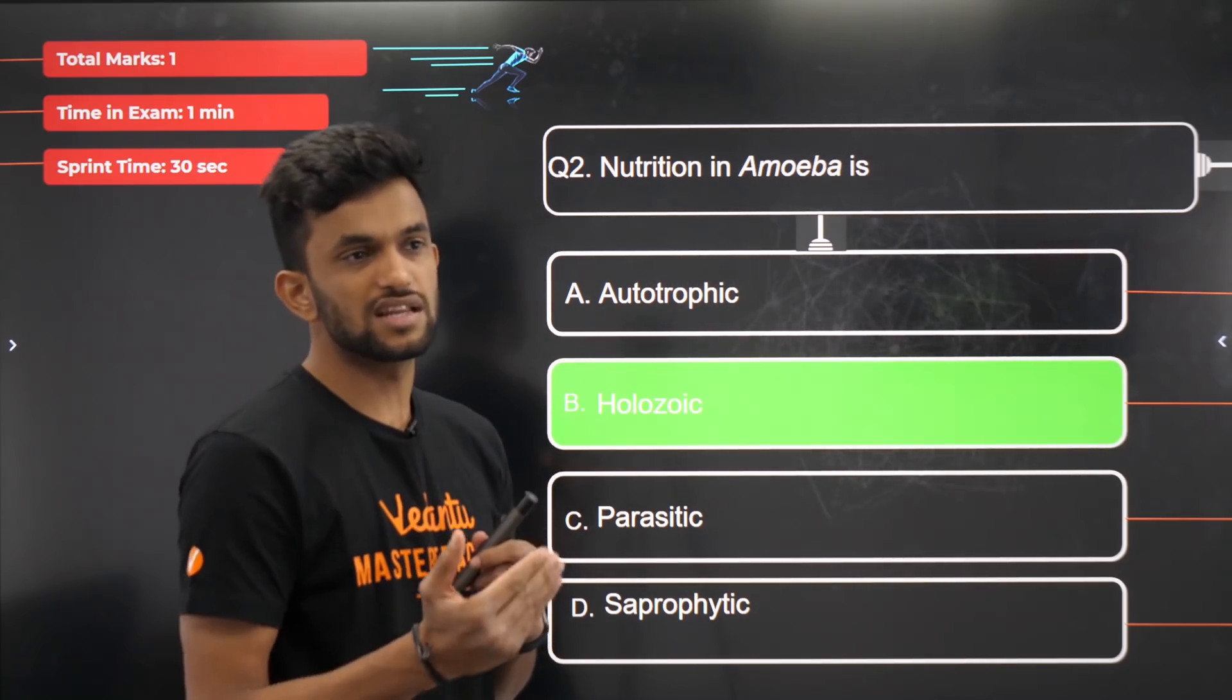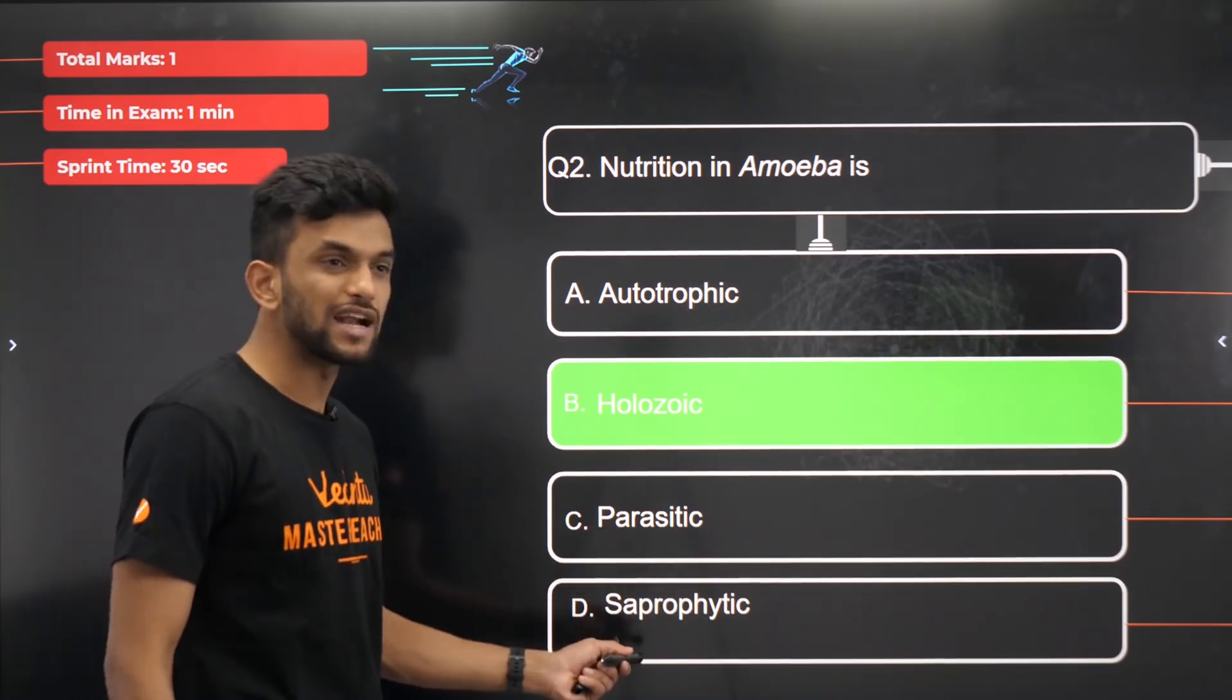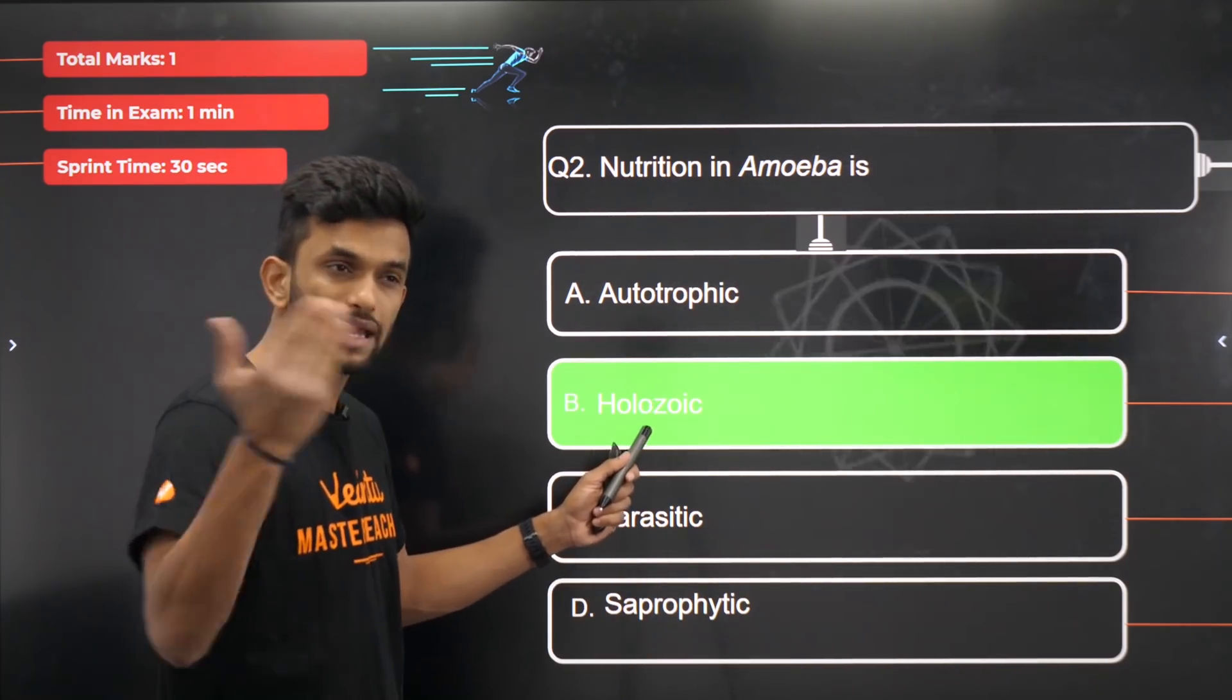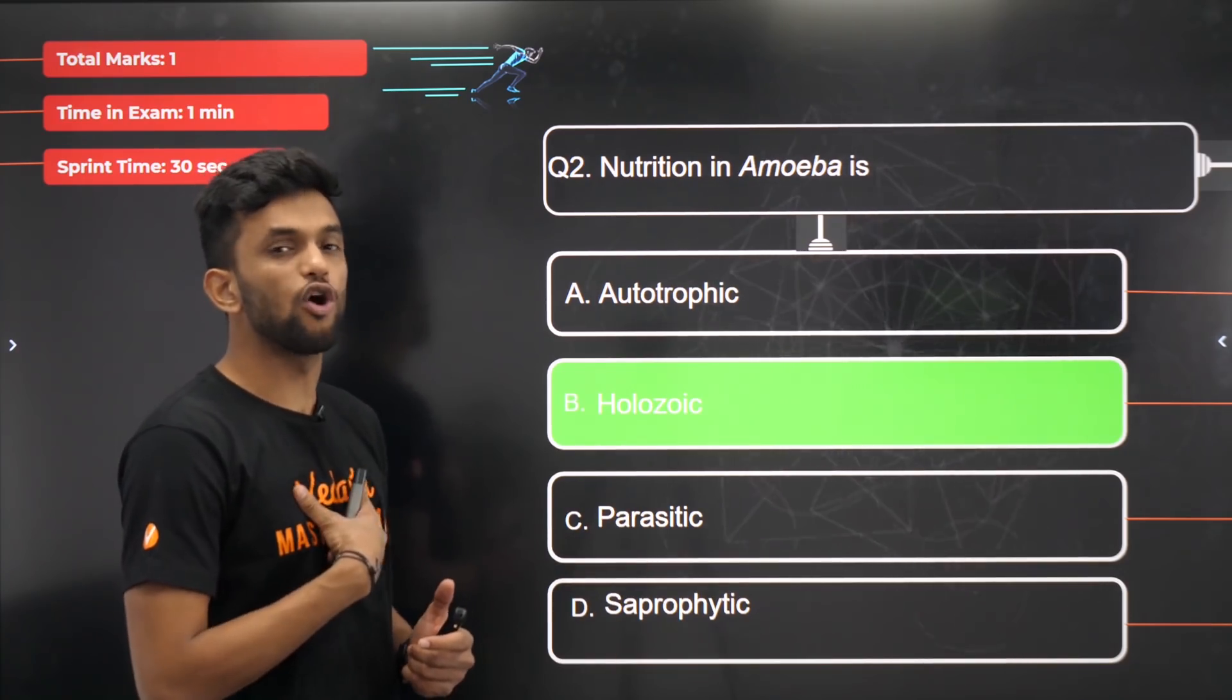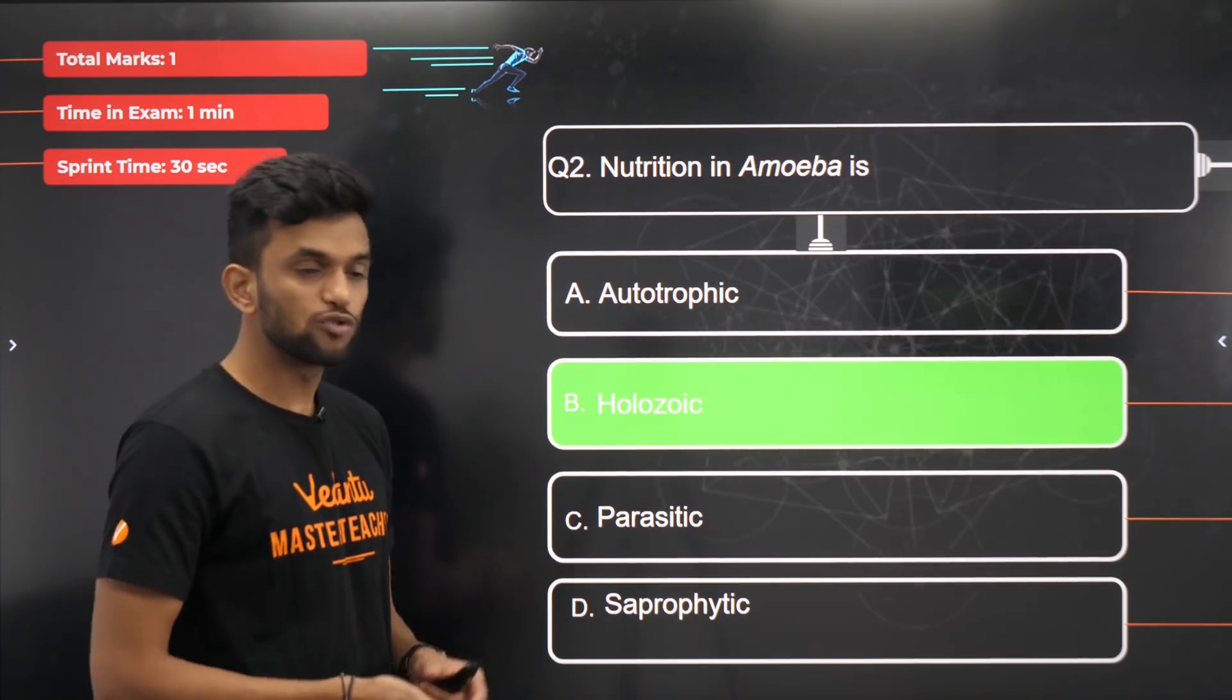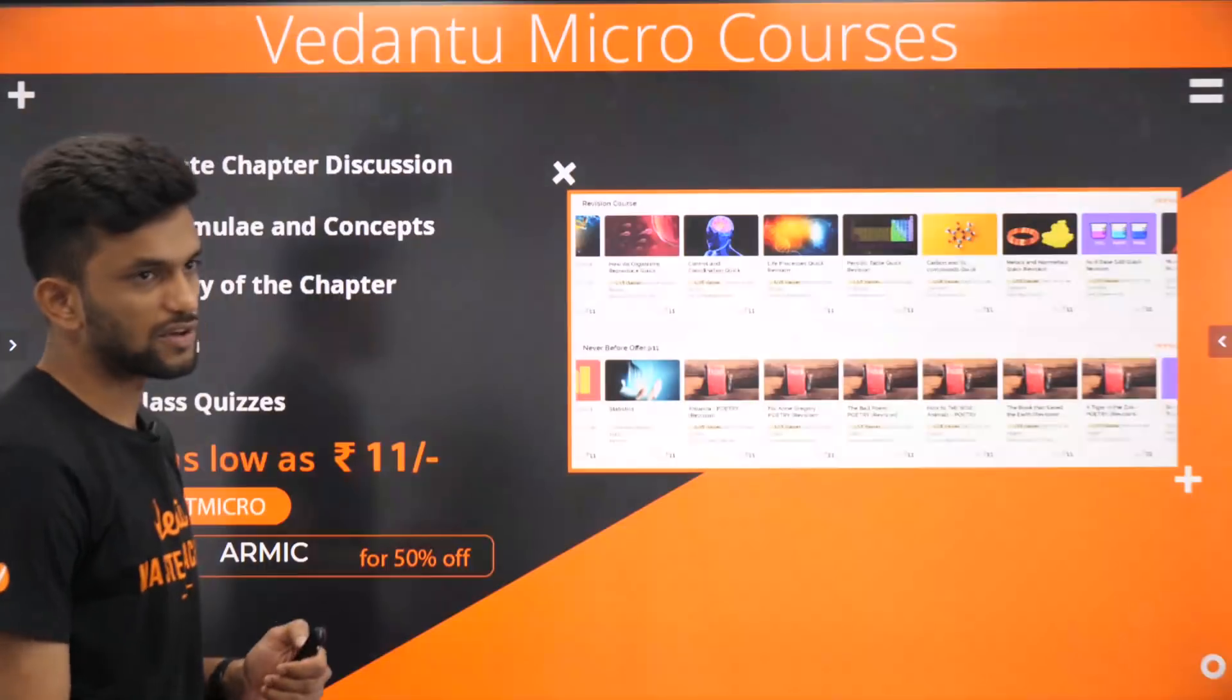In holozoic nutrition, digestion happens internally. Parasitic organisms absorb direct nutrients, saprophytic also absorb direct nutrients, whereas in holozoic they have to break it before they can use it. For example, humans follow holozoic nutrition. Whatever rice I eat, whatever chicken I eat, I have to break it down before I can use it. That is the process of digestion.